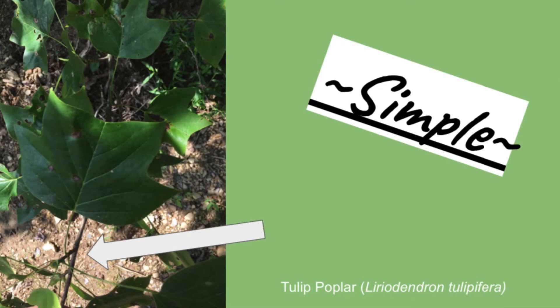Next you want to look at if the leaf is simple or compound. Simple leaves are just one single leaf blade attached to the stem, and this tulip poplar is a great example of that.